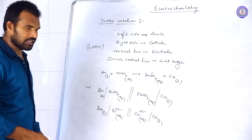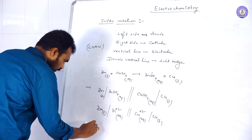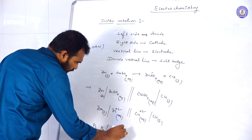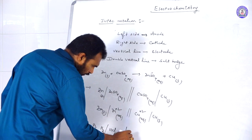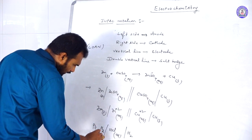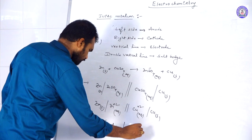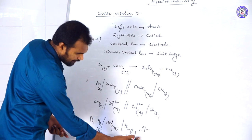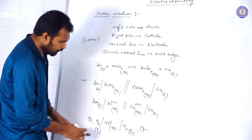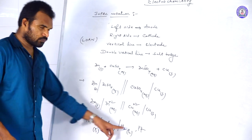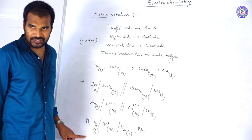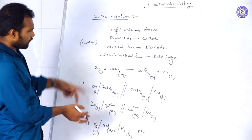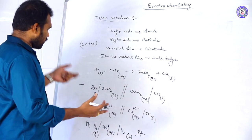In the case of gaseous reactions, the representation is: Pt | H₂ (P1 atm) | HCl(aq) ‖ HCl(aq) | H₂ (P2 atm) | Pt. The two hydrogen electrodes are at different pressures, which is why this is called a concentration cell — they differ in the pressures of the electrodes.